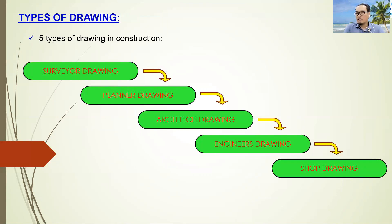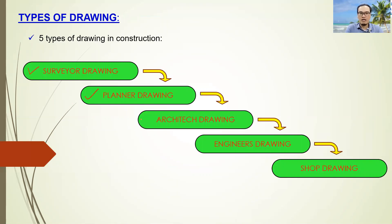As a civil engineer, we have to deal with at least five types of drawing in the construction industry, which is the surveyor drawing, the planner drawing, the architect drawing, the engineer's drawing, and the shop drawing.